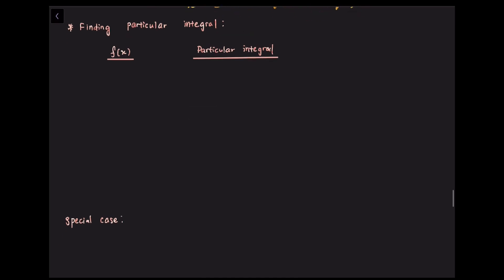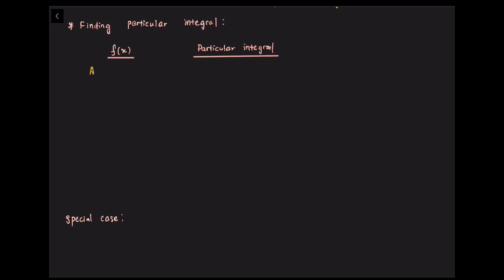A general rule covering all possible functions f(x) cannot be given. However, it is possible to draw out a table of suitable forms for the particular integral, given the possible forms of f(x) within the scope of the syllabus. The first type is a polynomial of degree n, and the particular integral is a₀ + a₁x + a₂x² + ... + aₙxⁿ.